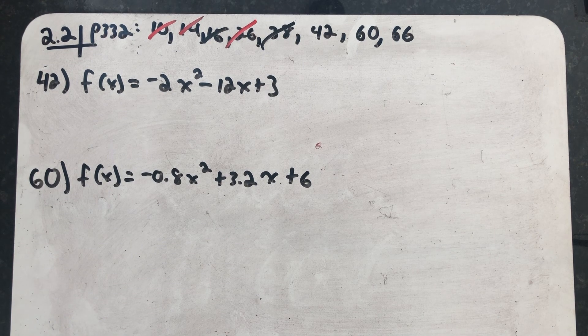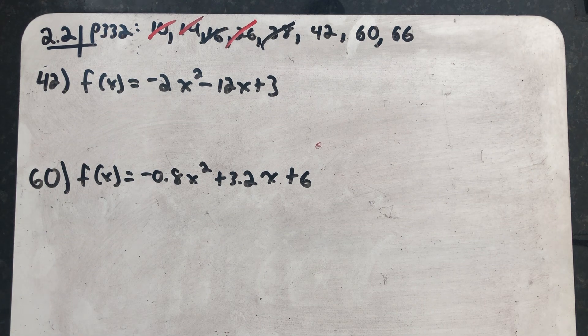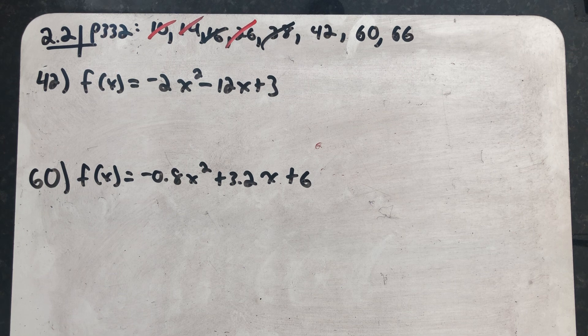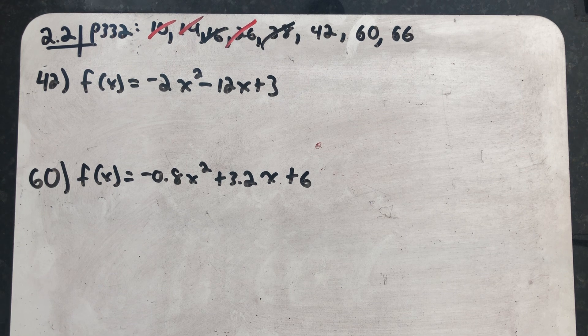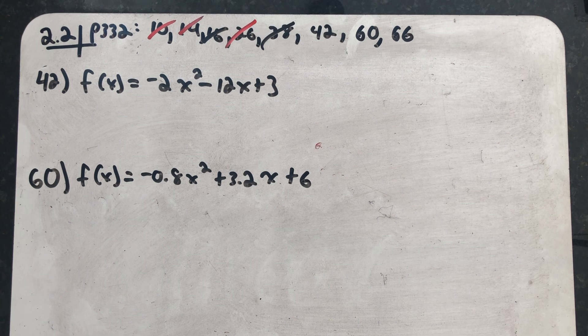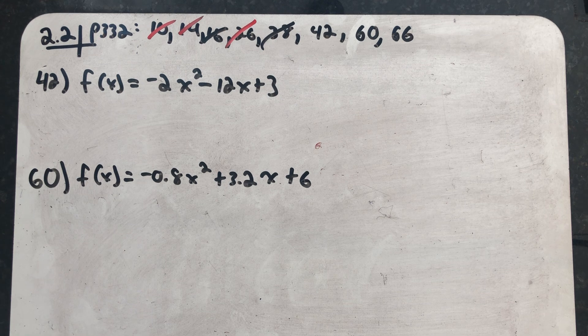Let's do those final three problems out of section 2.2. Number 42 asks us to do just three things: determine, without graphing, whether the function has a minimum value or maximum value; find the minimum or maximum value and determine where it occurs; identify the function's domain and range.